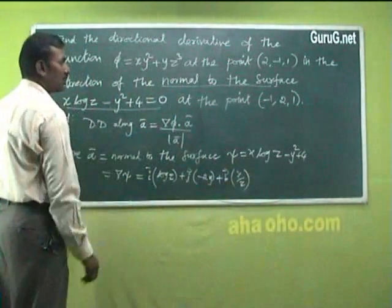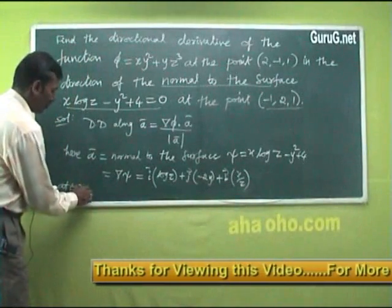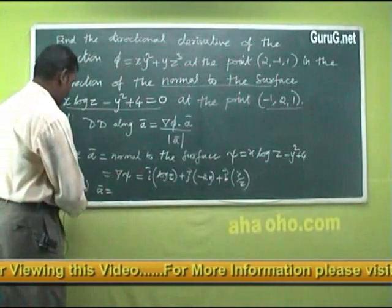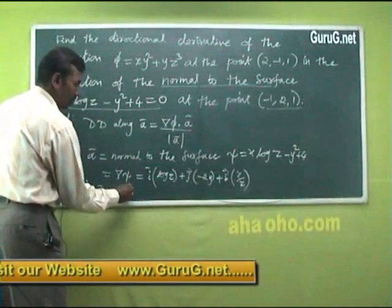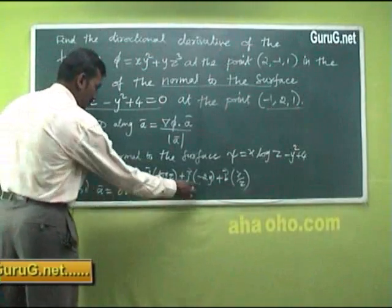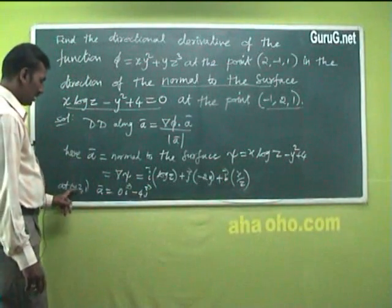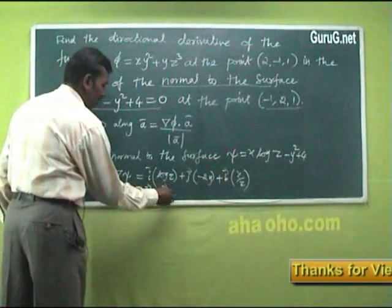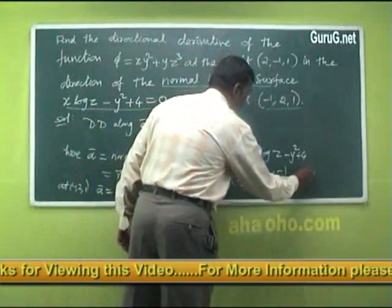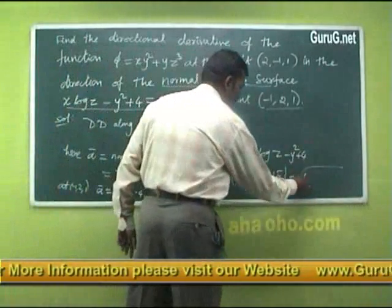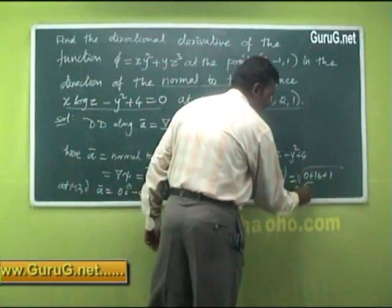At the point (−1, 2, 1): x = −1, z = 1, so log(1) = 0, giving the i-component = 0. y = 2, so −2y = −4j. x/z = −1/1 = −1, giving −k. So A = 0i − 4j − k. The modulus |A| = √(0 + 16 + 1) = √17.